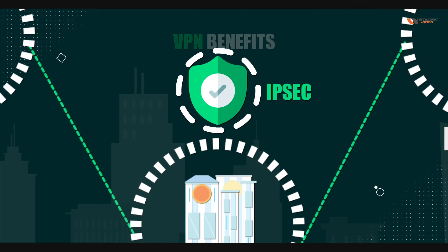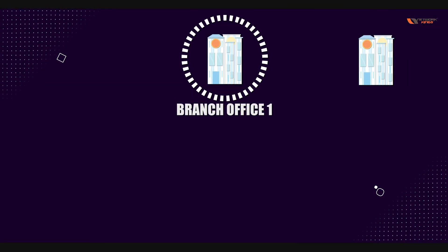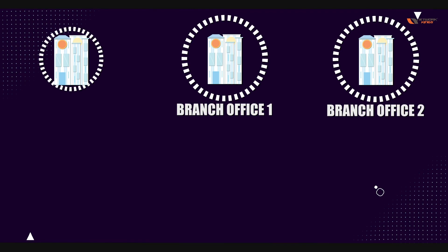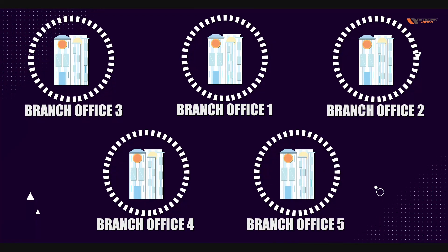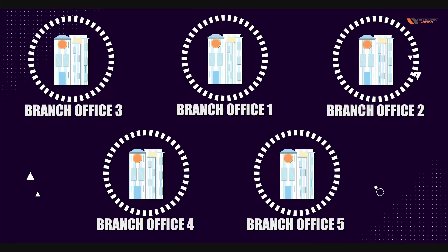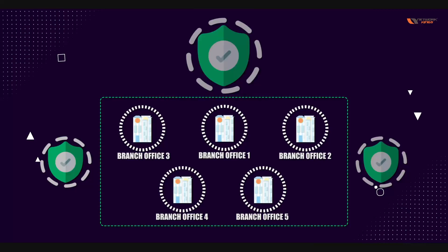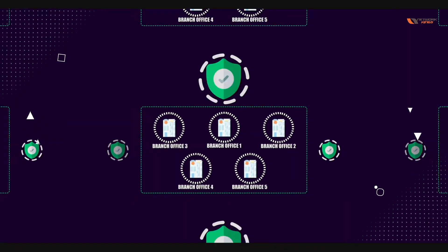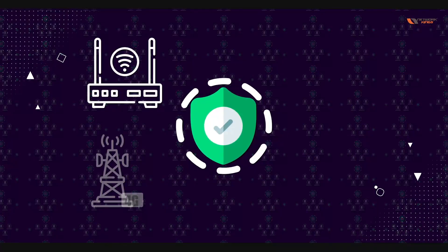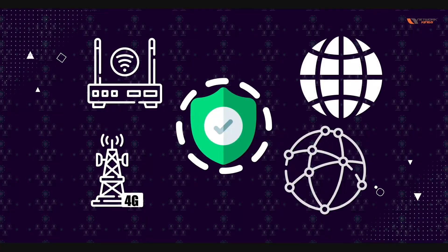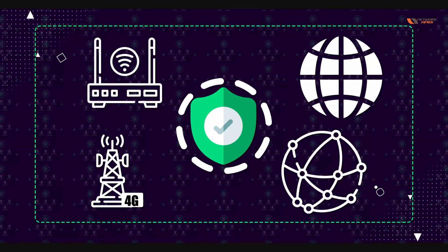The third benefit is scalability. Suppose you have three branch offices now, and in the future you have five more branches. Over the internet, you just have to connect your offices with VPN. VPN can be implemented across a wide variety of WAN links — you can have VPN on 4G links, internet links, and broadband links. You can use any type of connection for VPN.